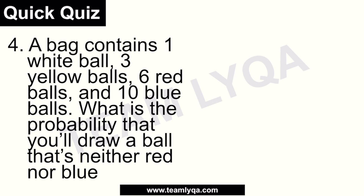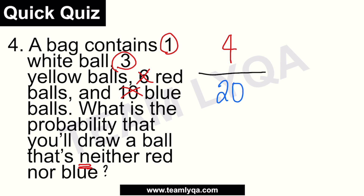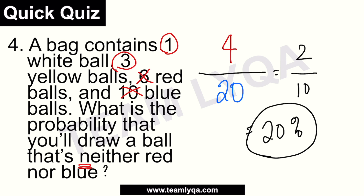Number four, same bag. What is the probability that you'll draw a ball that's neither red nor blue? We don't want red and we don't want blue. White — okay. Yellow — okay. Red — no, that's six balls excluded. Blue — no, that's ten balls excluded. What we're left with is one white plus three yellow, which is four, all over twenty. That gives us two over ten, or twenty percent. Notice that numbers three and four have the same answer — just phrased differently. Be careful with 'either' vs. 'neither.'